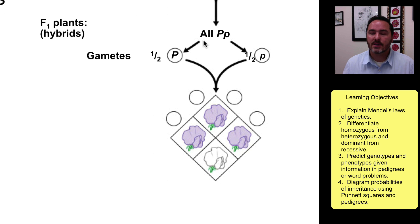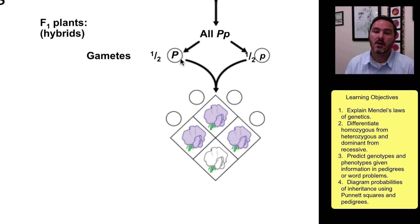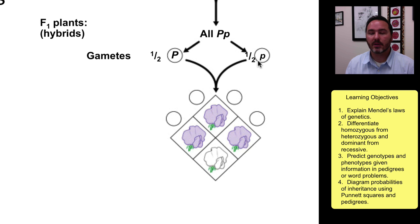Then he allowed this generation to cross with itself. If you think about it, the only types of gametes that can be made from a big P, little P individual are half big P and half little P.